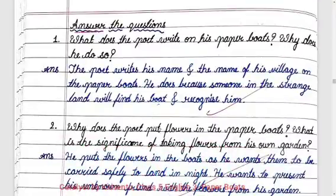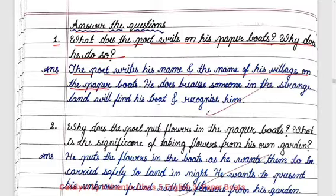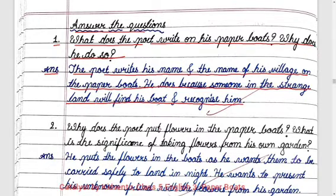Answer the questions. Question number one: What does the poet write on his paper boats? Why does he do so? Answer: The poet writes his name and the name of his village on the paper boats. He does so because someone in a strange land will find his boat and recognize him.